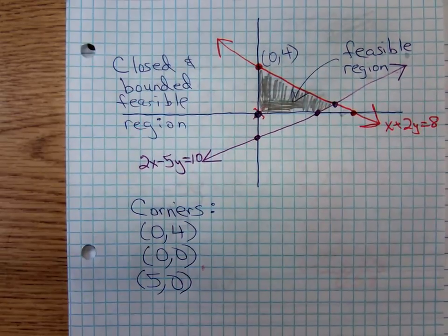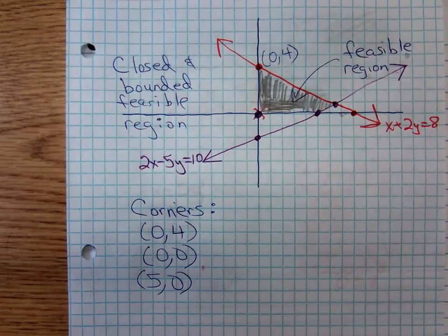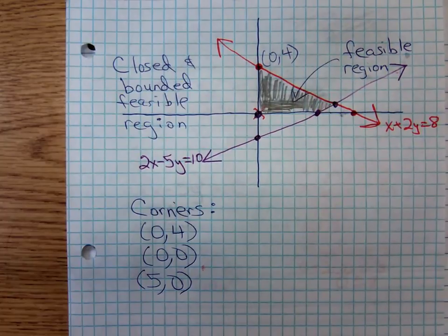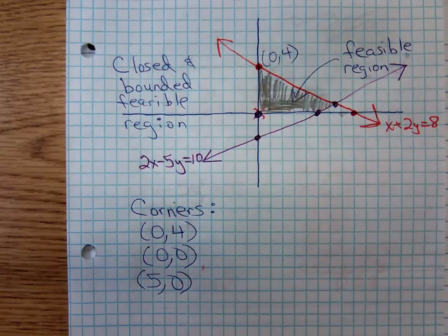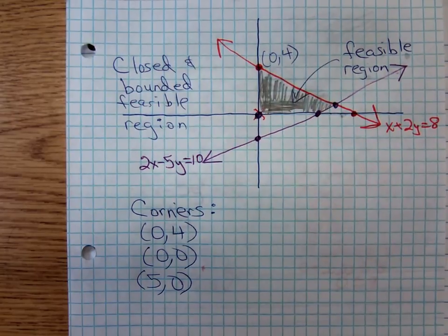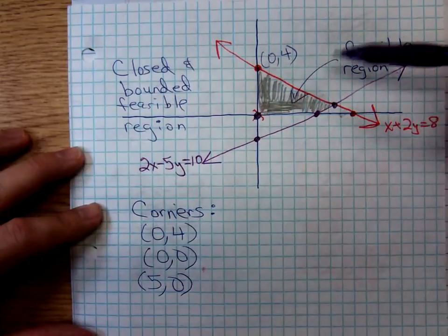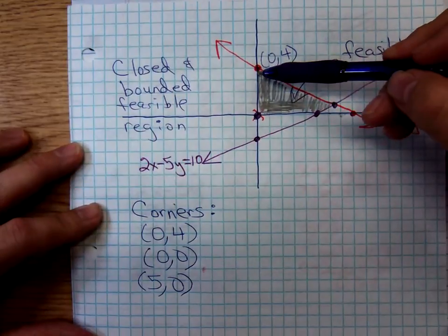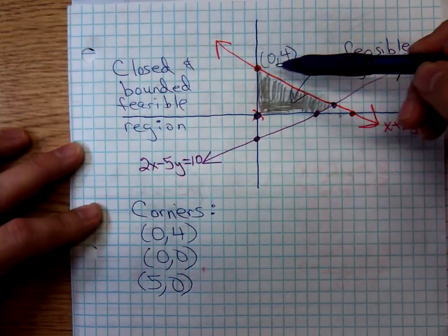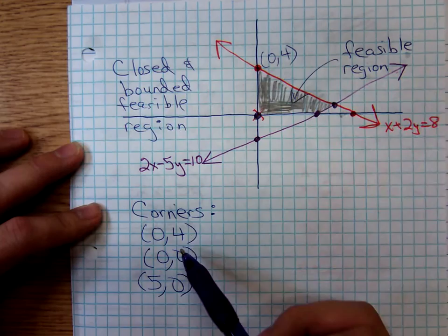Hi, I'm Timothy Brucella again. We're looking at graphing feasible regions in my Math 1325 class. Here we're looking at a closed bounded feasible region. The corner points are the points where the boundary lines change. If you trace along the feasible region, the first corner point we come to right there is 0, 4.